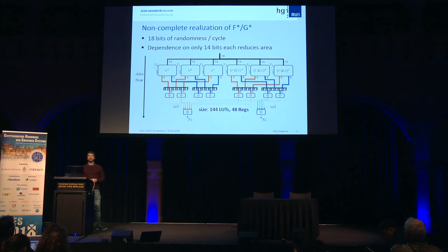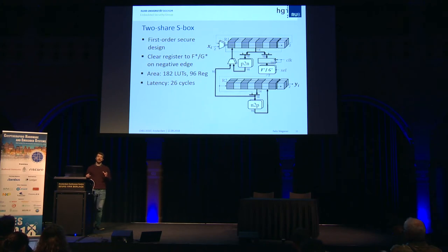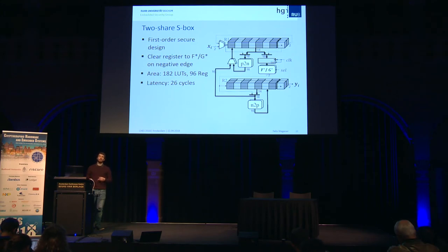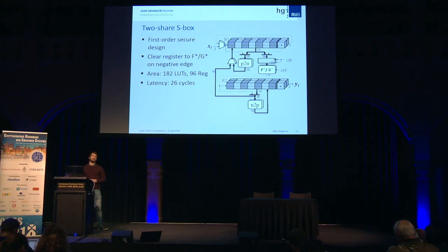We can realize the function in 144 lookup tables. Integrating that into the full S-box: we shift in bits, convert with a P2N function, evaluate F-star in eight cycles, put the result in the lower register, write it back, then evaluate G in the next eight cycles for the final result, then convert back. In total, this S-box has an area of 182 LUTs and a latency of 26 cycles.